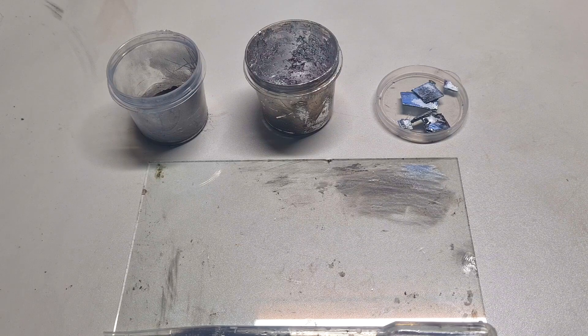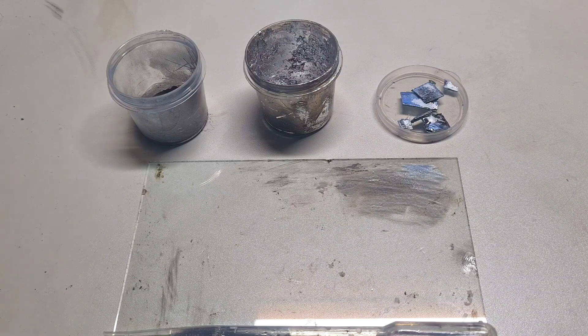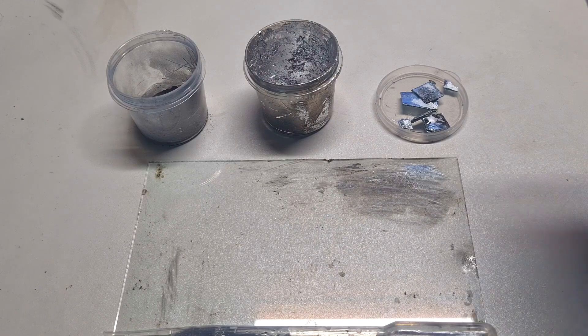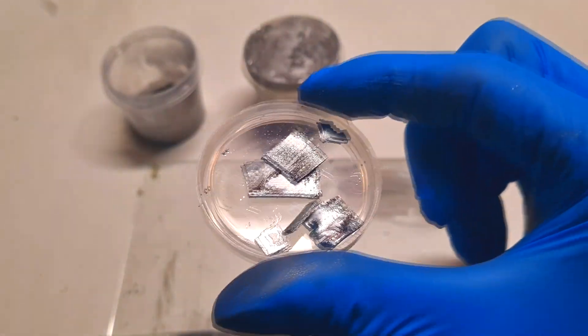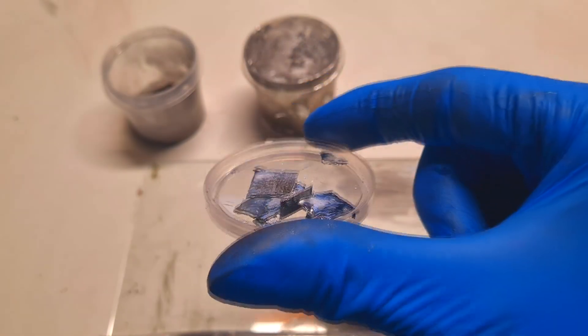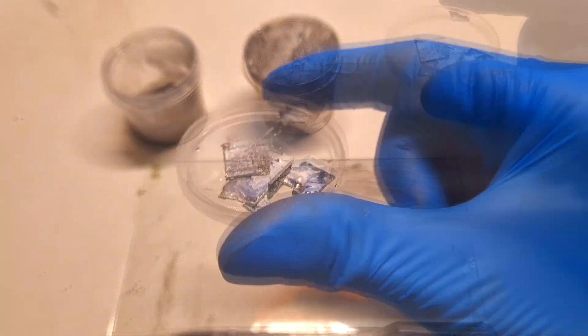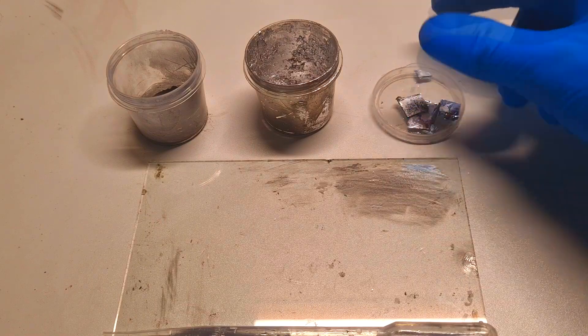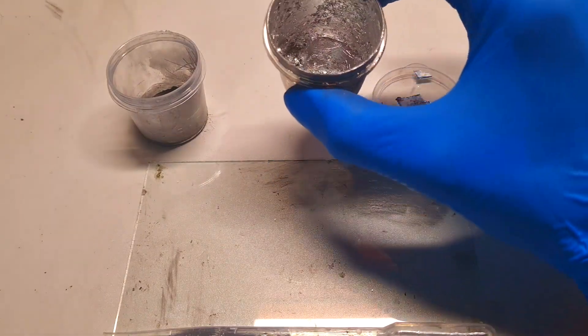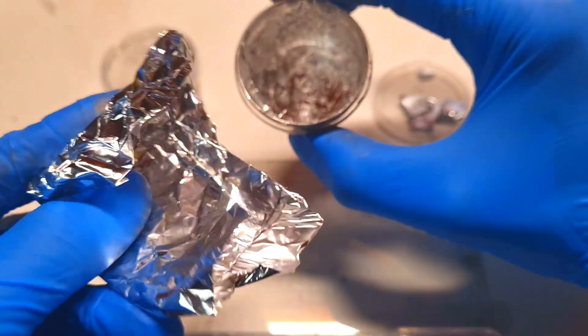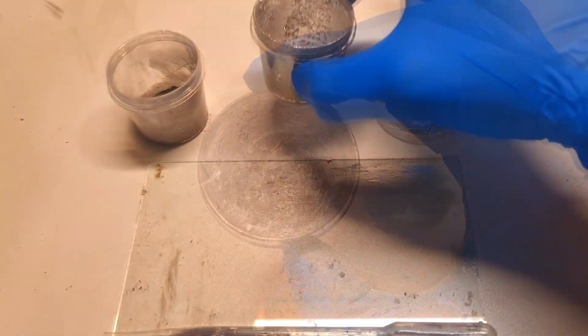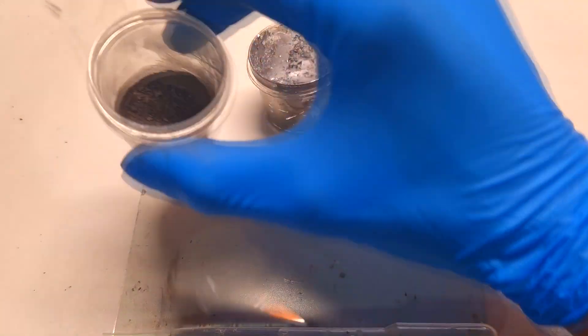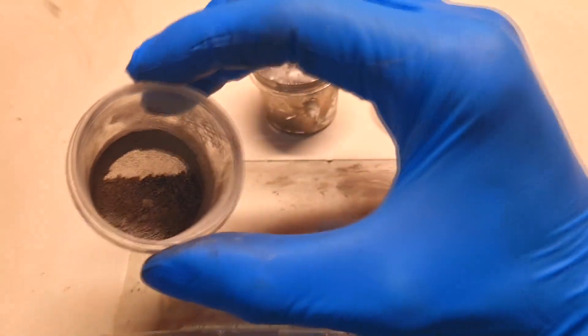Here I prepared three aluminum gallium alloys to see which one would be better. First one is made from an aluminum piece which has a thickness of one millimeter. The second one is made from kitchen aluminum foil like this one. And the third one is made from aluminum powder.